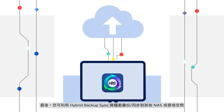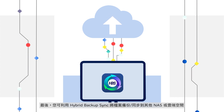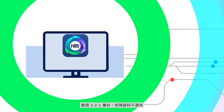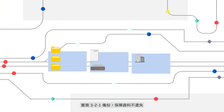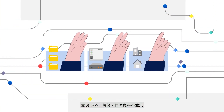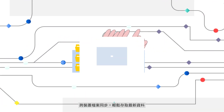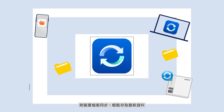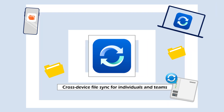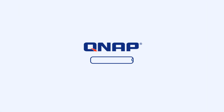Last but not least, you can backup or sync files to the cloud through Hybrid Backup Sync. Implementing a comprehensive 3-2-1 backup plan has never been easier. Q-Sync: Cross-Device File Sync for individuals and teams.